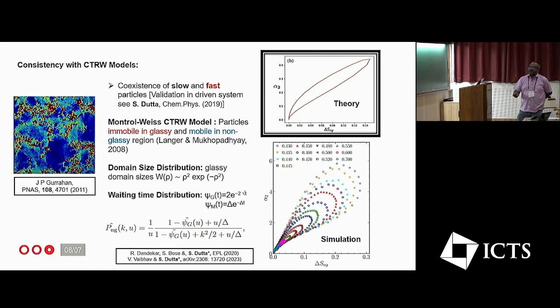These are the two waiting time distributions, and if you make use of all these ingredients, you can formulate the displacement distribution in the Fourier Laplace space by CTRW. And then if you can take the inverse Fourier transform and the inverse Laplace transform, you end up with the distribution of the displacements.